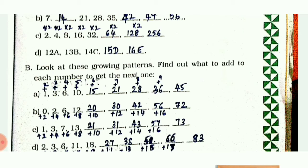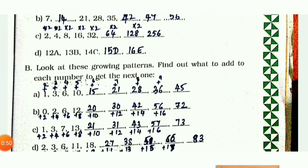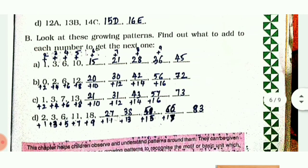Here each number is added by a different number - you have to check that. In the previous example, each number was added by the same amount (5 or 7). Here you have to check all the given numbers. For this example: 1 + 2 = 3, 3 + 3 = 6.